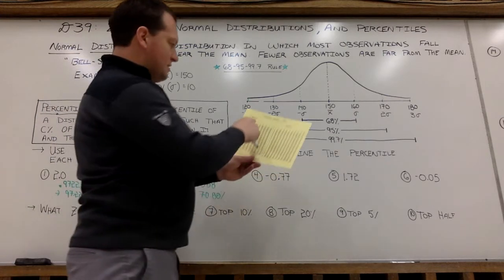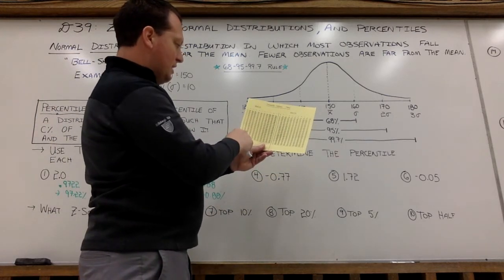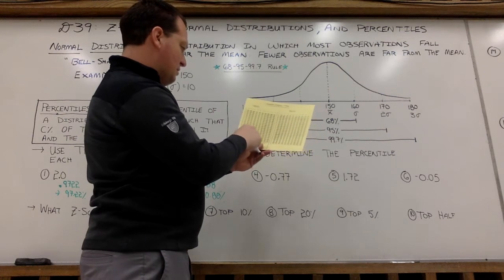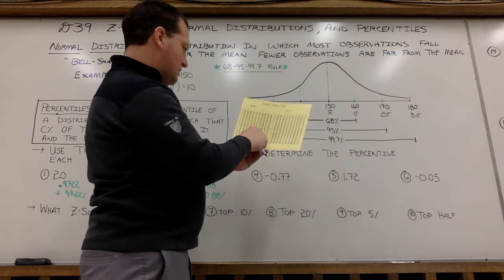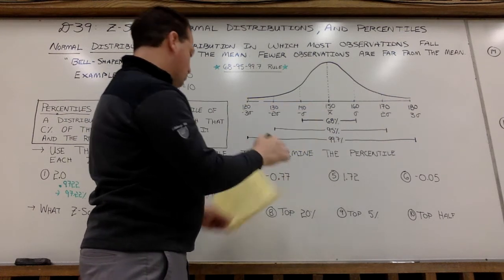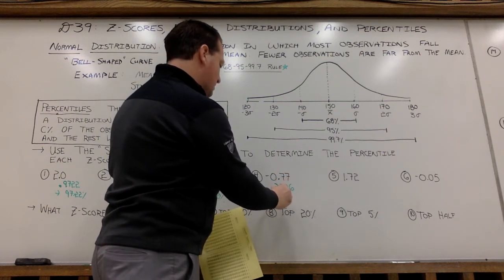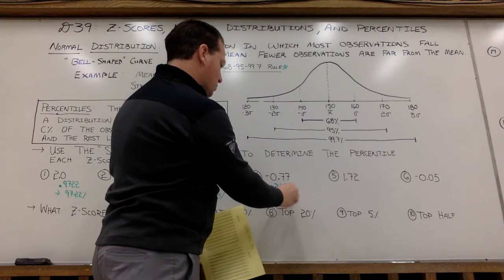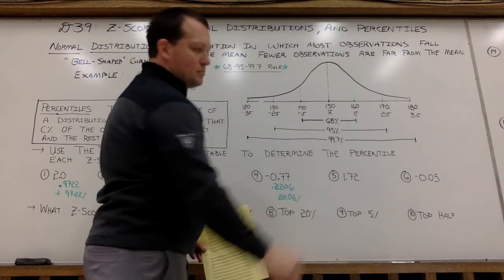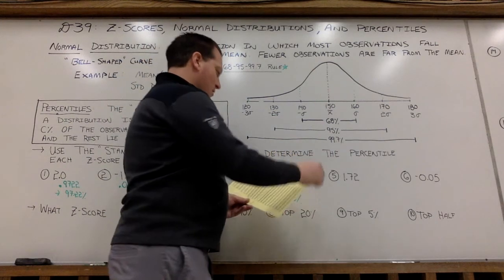Negative 0.77, so I'm going to go negative 0.7, and then all the way over to 7 in my hundredths, 0.2206. Again, this is not very exciting, but this will help you when we get to word problems next lesson.